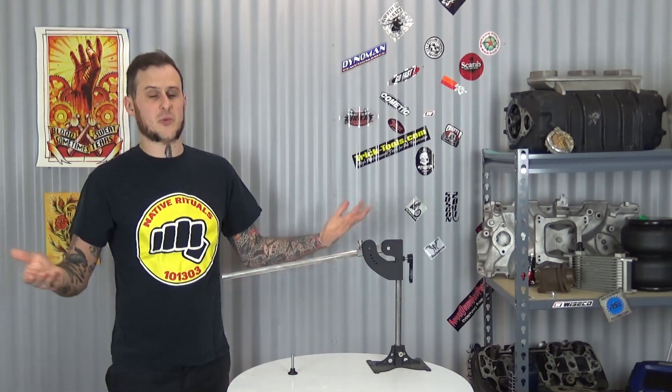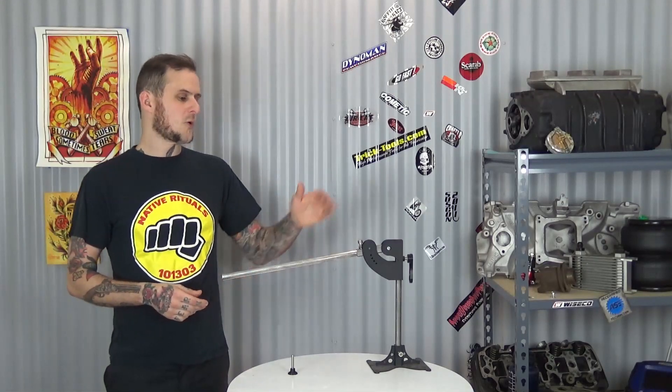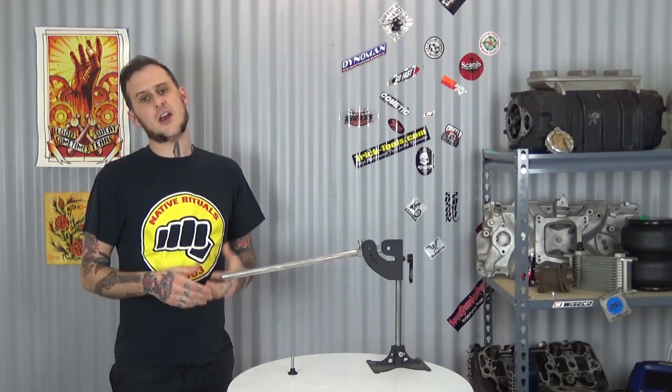This is available from Brad at Hourglass Ingenuity. He sells it in either a $99 do-it-yourself kit, which comes with all the pieces you need to weld together. If you're buying this, you're probably a welder, so you might want to go that route. Or you can pick it up as I have here in the powder-coated and assembled version for $150.